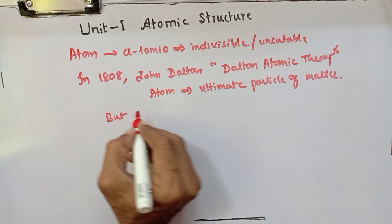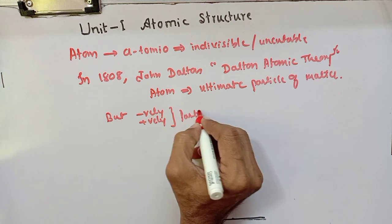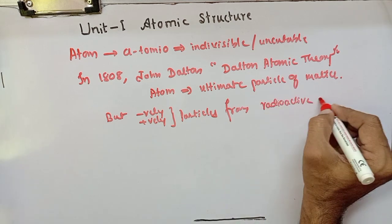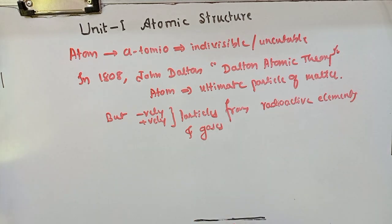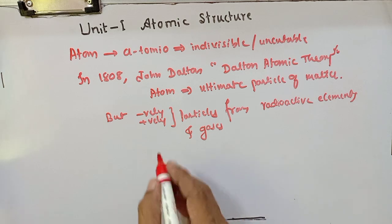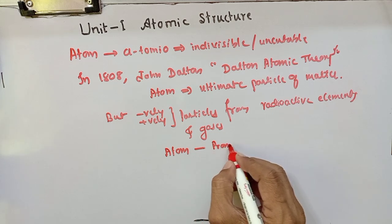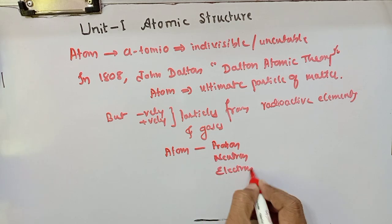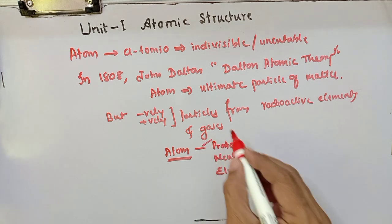But emission of negatively charged and positively charged particles from radioactive elements and gases under the passage of electricity at very low pressure clearly indicated that atom consists of three smaller subatomic particles — three smaller fundamental particles like proton, neutron and electron.